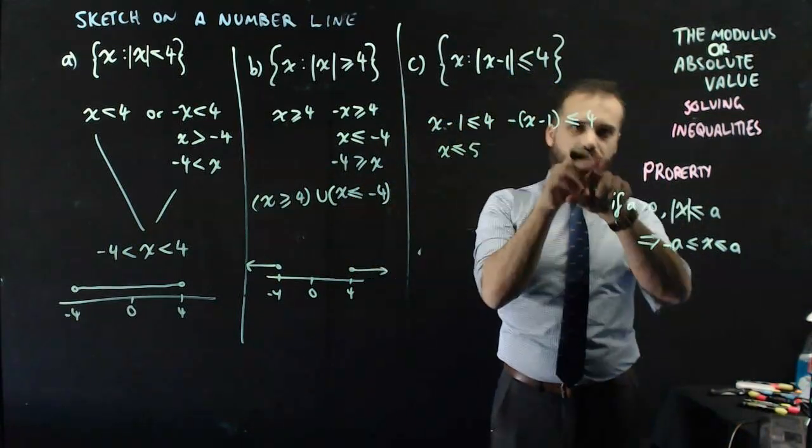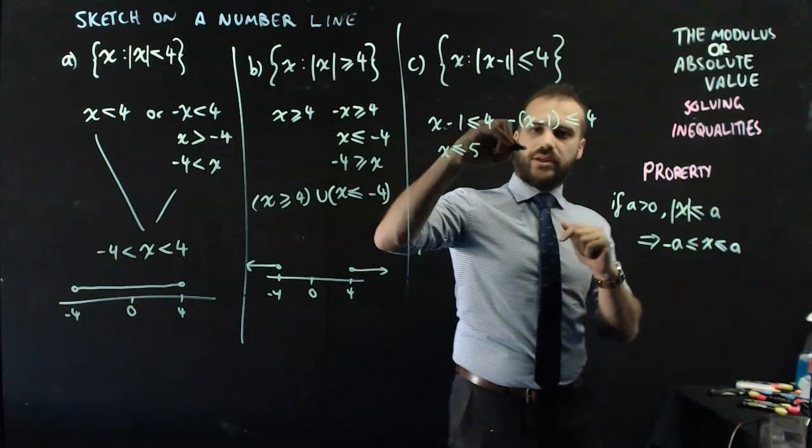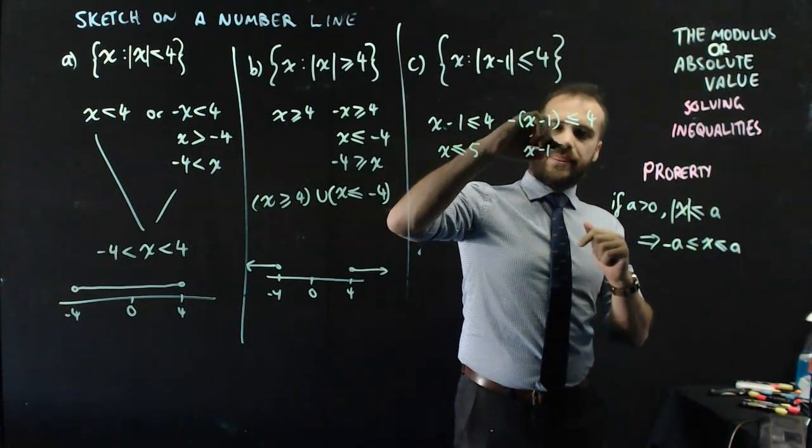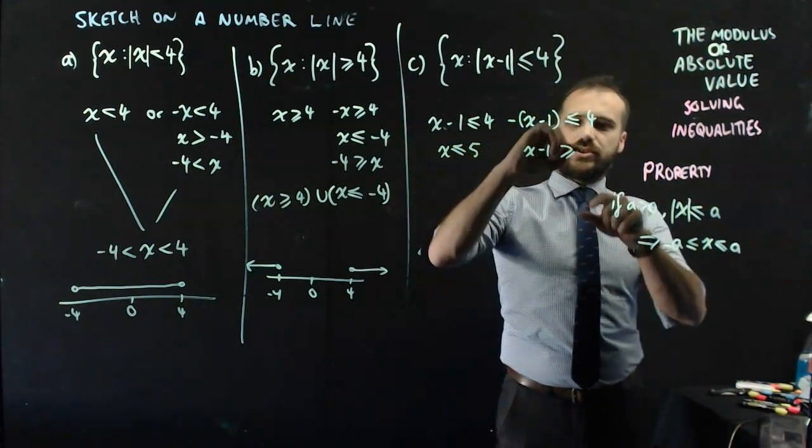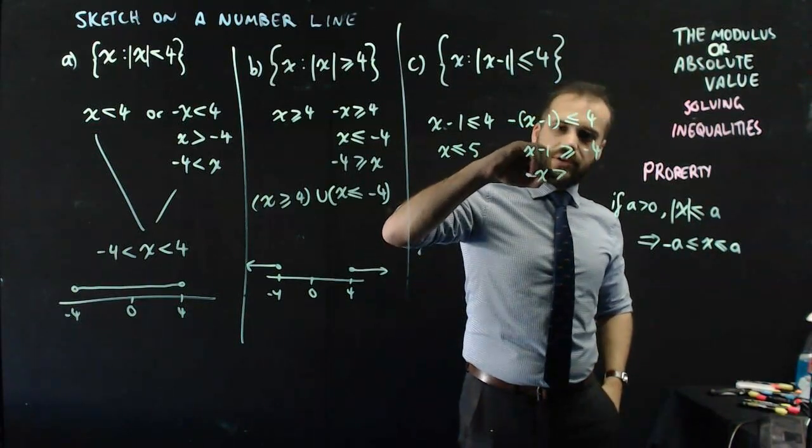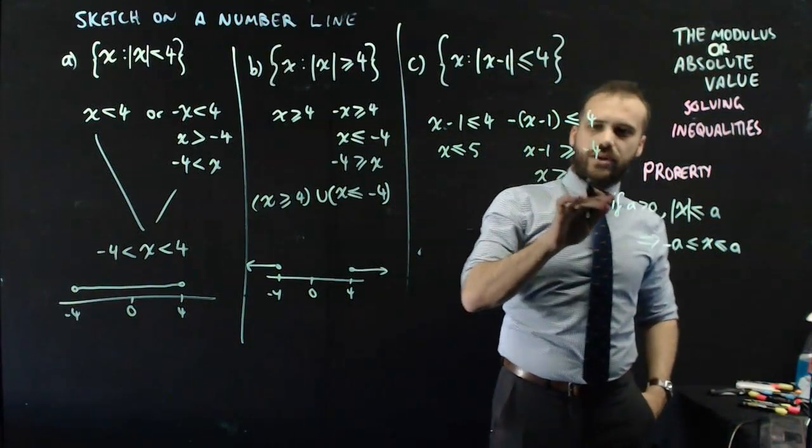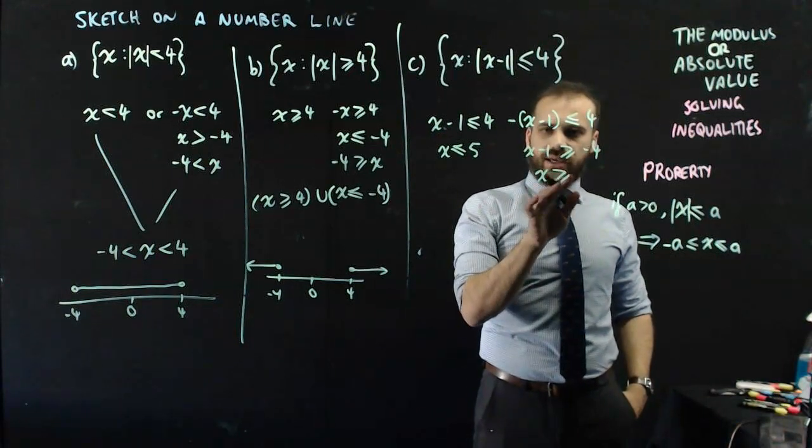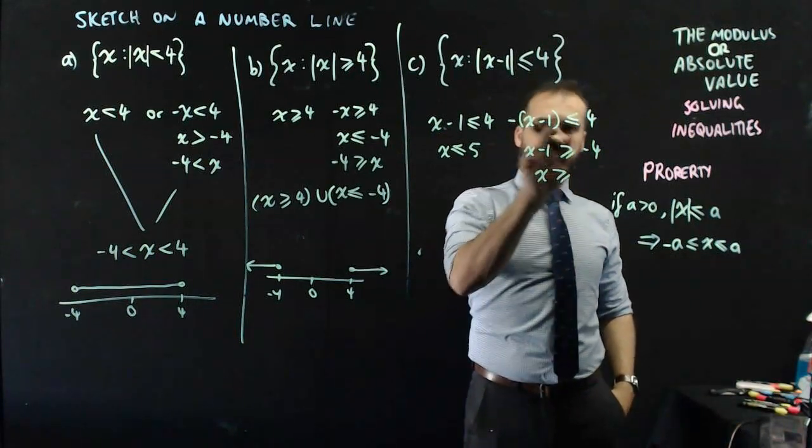Now this one, we need to divide by negative or multiply by negative 1, I don't care. x minus 1 is greater than or equal to negative 4. And x is greater than or equal to, move the negative 1 over here, and I get negative 3.